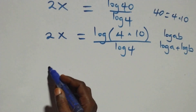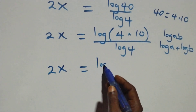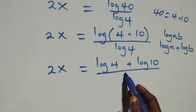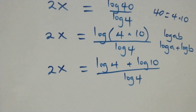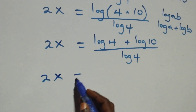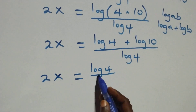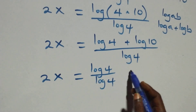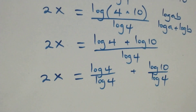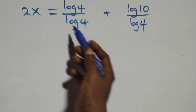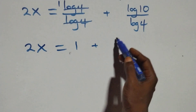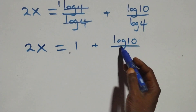At this here, this becomes 2x equals (log 4 + log 10) over log 4. We divide, so that is the same as log 4 times 1. We have 2x equals log 4 over log 4 plus log 10 over log 4. We have log 4 cancelled, leaving 1, and we have 2x equals 1 plus log 10 over log 4.